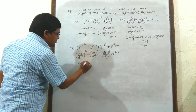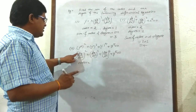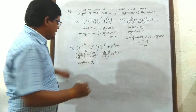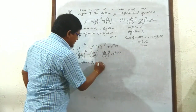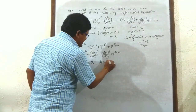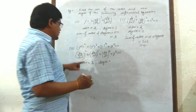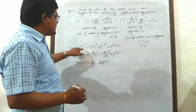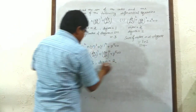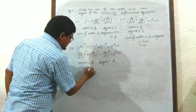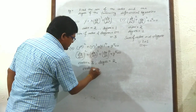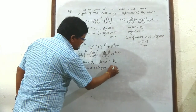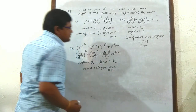Another example: order equals 3 because the highest order derivative is d³y/dx³, and degree equals 2 because the highest exponent on it is 2. Therefore sum of order and degree equals 3 + 2 = 5.